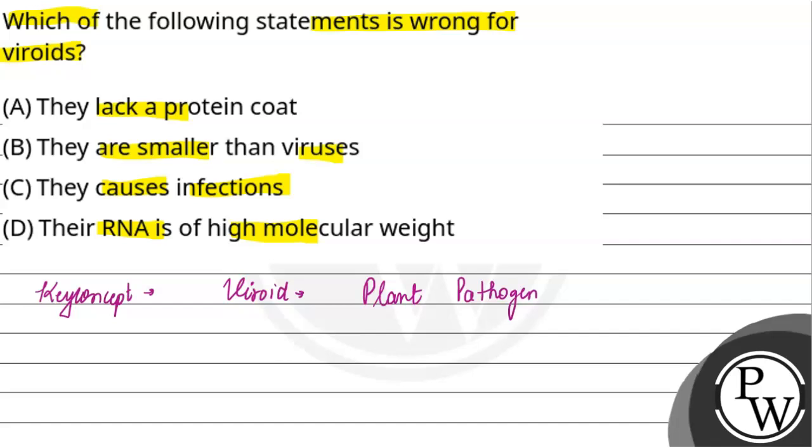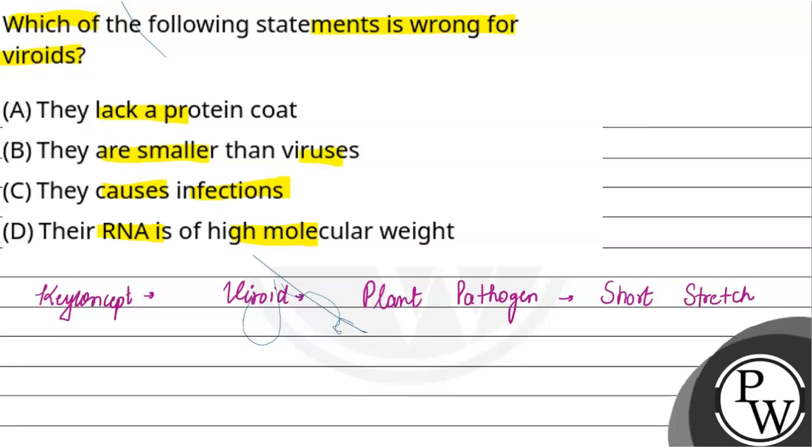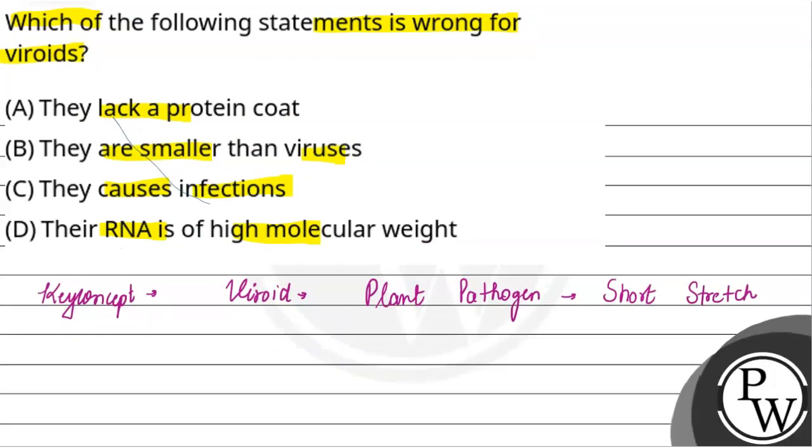Viroid consists of short stretch of highly complementary circular stranded RNA.